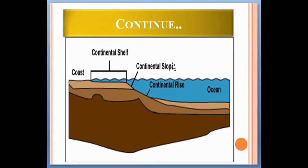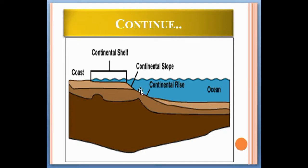Here is a photograph showing the continental shelf and continental slope. The continental shelf is the shallow part of the ocean connected with the land or coast area, while the continental slope is a much steeper portion situated between the continental shelf and the deep ocean basins.